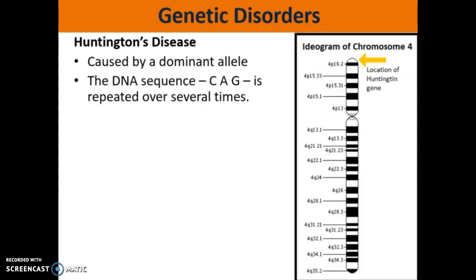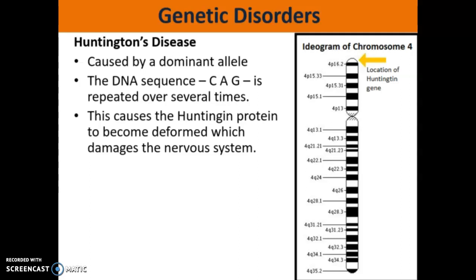Huntington's is caused by a mutation in chromosome 4. At the very end of chromosome 4, you have the DNA sequence CAG repeated over and over again. The more repeats you have, the more severe the symptoms of Huntington's. This mutation causes the Huntingtin protein to become deformed, and this deformed protein starts to build up in the nervous tissue — specifically the brain — and it starts to actually destroy the person's brain.